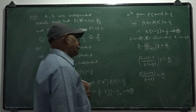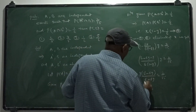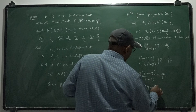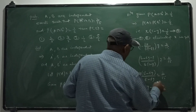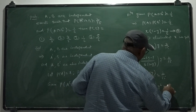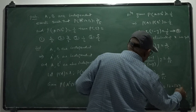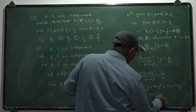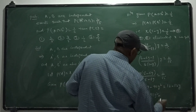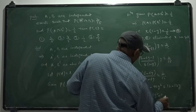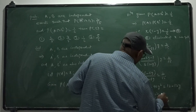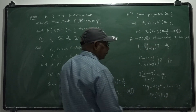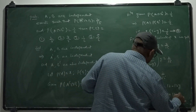Solving this, we get a quadratic in Y: 90Y squared minus 87Y plus 12 equals 0.